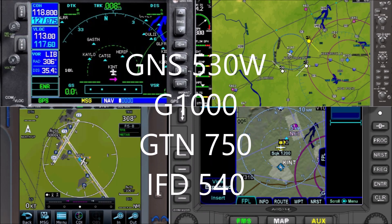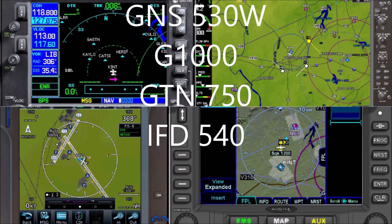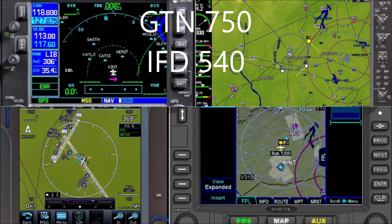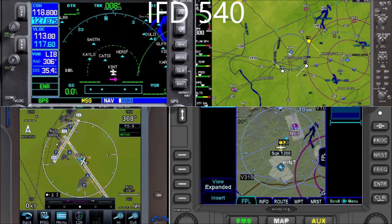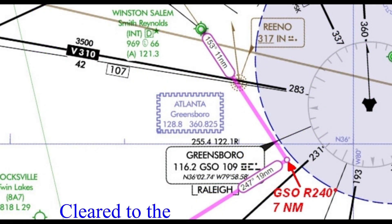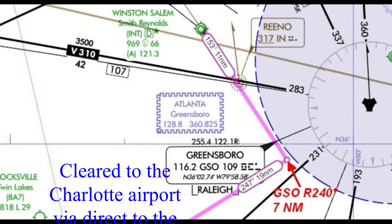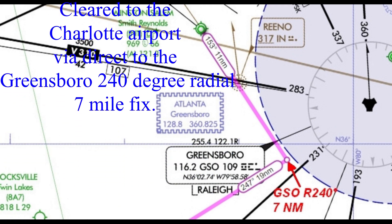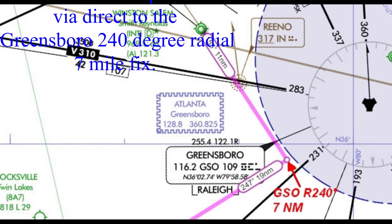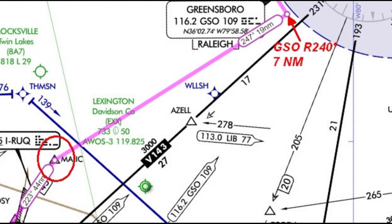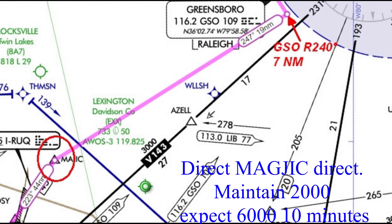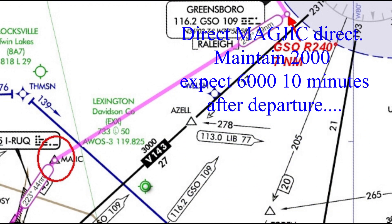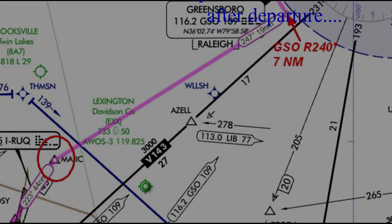We will look at the Garmin GNS 530, the G1000, the Garmin GTN 750, and the Avidyne IFD 540. Here is our clearance: cleared to the Charlotte airport via direct to the Greensboro 240 degree radial seven mile fix, direct Magic, direct. Maintain 2,000, expect 6,000 ten minutes after departure.